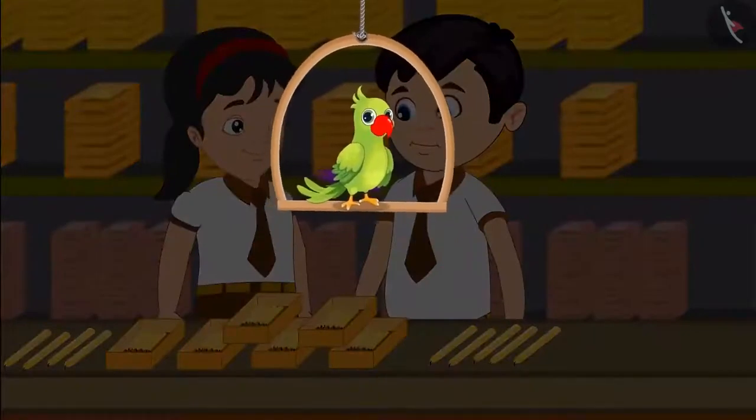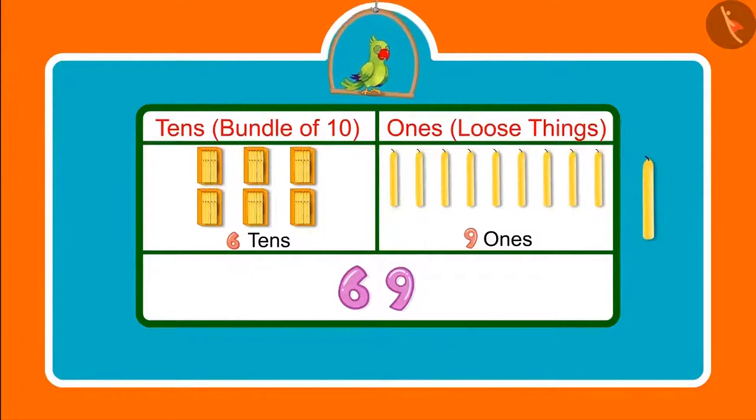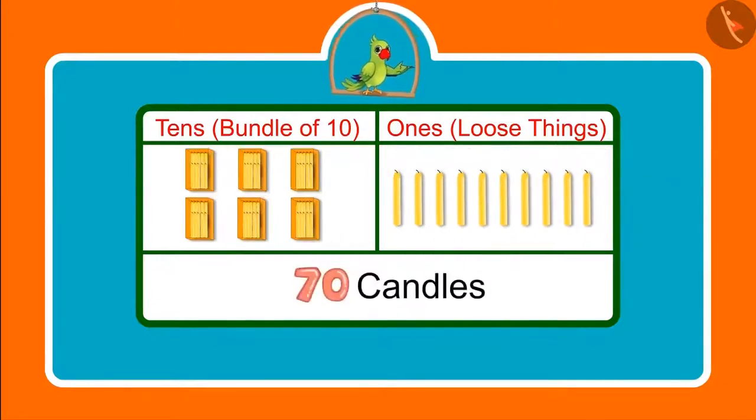Children, you saw how Chotu and Pinky counted candles. They had 69 candles, which means 6 tens and 9 ones. Children, if children had Chotu and Pinky got 1 more candle, then what would have become the total number of candles? They would have got 70 candles.